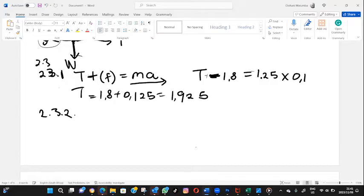2.3.2: The free body diagram is like that. We have your normal, we have the weight, we have the friction, we also have the tension. And on this side, we have the components. We have two components. We have that component of the applied force which is parallel and the one which is perpendicular.